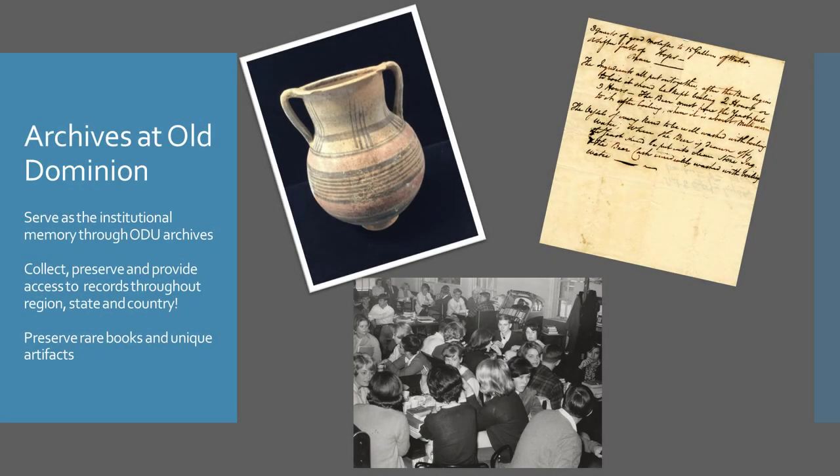Now that you know more about what archives are, what archivists do, and how we collect, arrange, and describe collections, I'll talk about how all that relates to what we do here at Old Dominion University. The archives at ODU is made up of three collecting arms. The first is the University Archives, which documents the history of ODU from its founding in 1930 to the present. That includes records related to offices and departments on campus such as the Office of the President, the Provost, the Deans, and the VPs, but also student life records, student and staff organizations, alumni records, faculty personal papers, photographs, and AV materials.